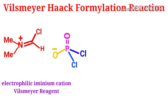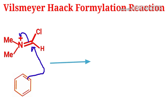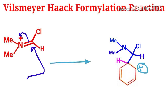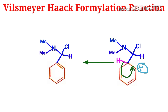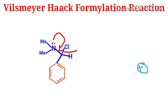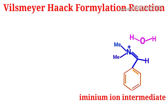After formation of the electrophilic iminium cation (the chloroiminium ion), the electron-rich aromatic hydrocarbon — here benzene — attacks this carbon center, and the positive charge becomes neutralized. This gives an intermediate with a positive charge, and when the hydrogen leaves, the lone pair on the nitrogen atom delocalizes and chlorine is removed as a leaving group to give the iminium ion intermediate.